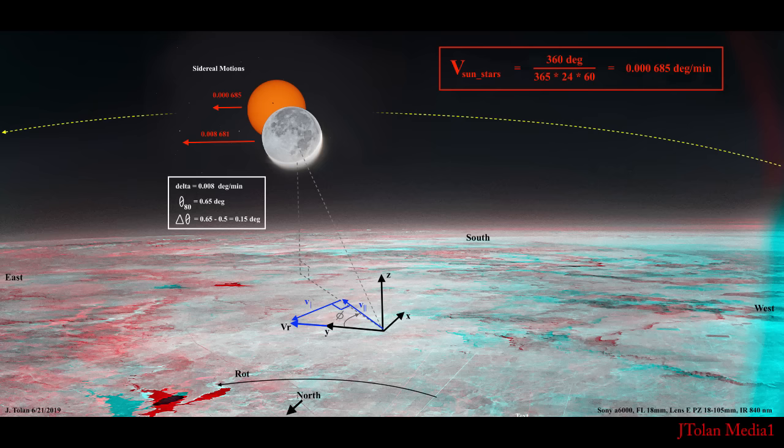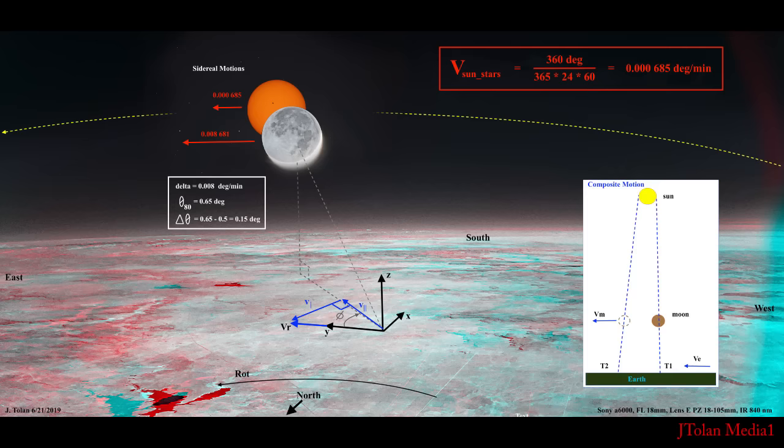And that's because the surface moved and the observer, which is me, moved in that direction. Kind of moving the moon back a little bit, retarding it, because I'm moving in the same direction with it. So we have that 0.15 degrees. Now let's use that further to do some interesting calculations here. We'll first need to break down the composite motion, as you see in the lower right inset.